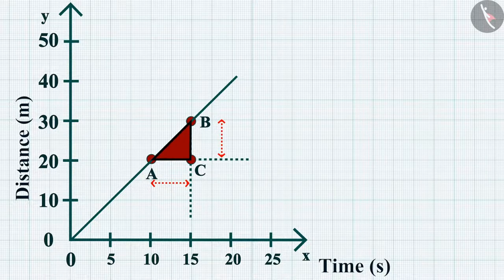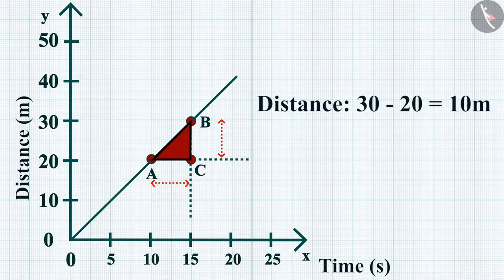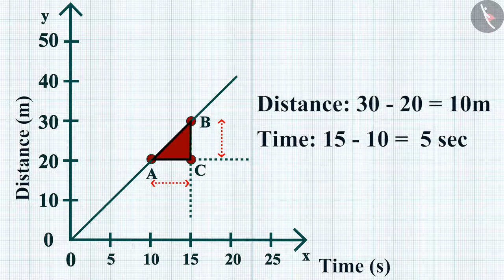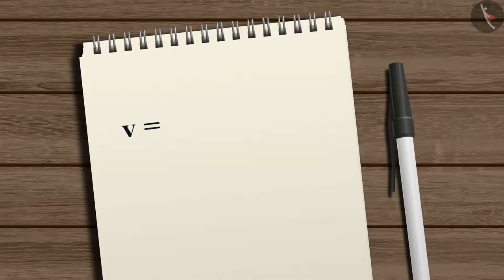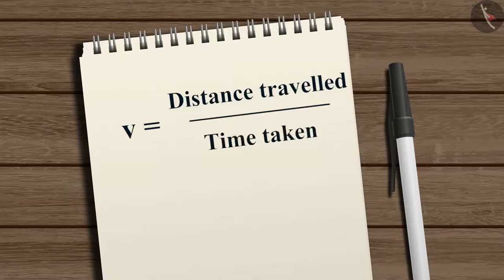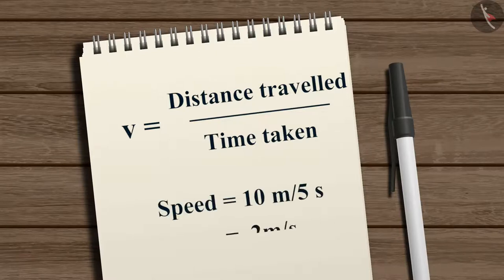We can see from the graph that as the object moves from point A to B, it covers a distance of 30 minus 20, equal to 10 meters, in a time of 15 minus 10, equal to 5 seconds. The speed v of the object is determined as: v = distance traveled / time taken = 10 meters / 5 seconds = 2 meters per second.